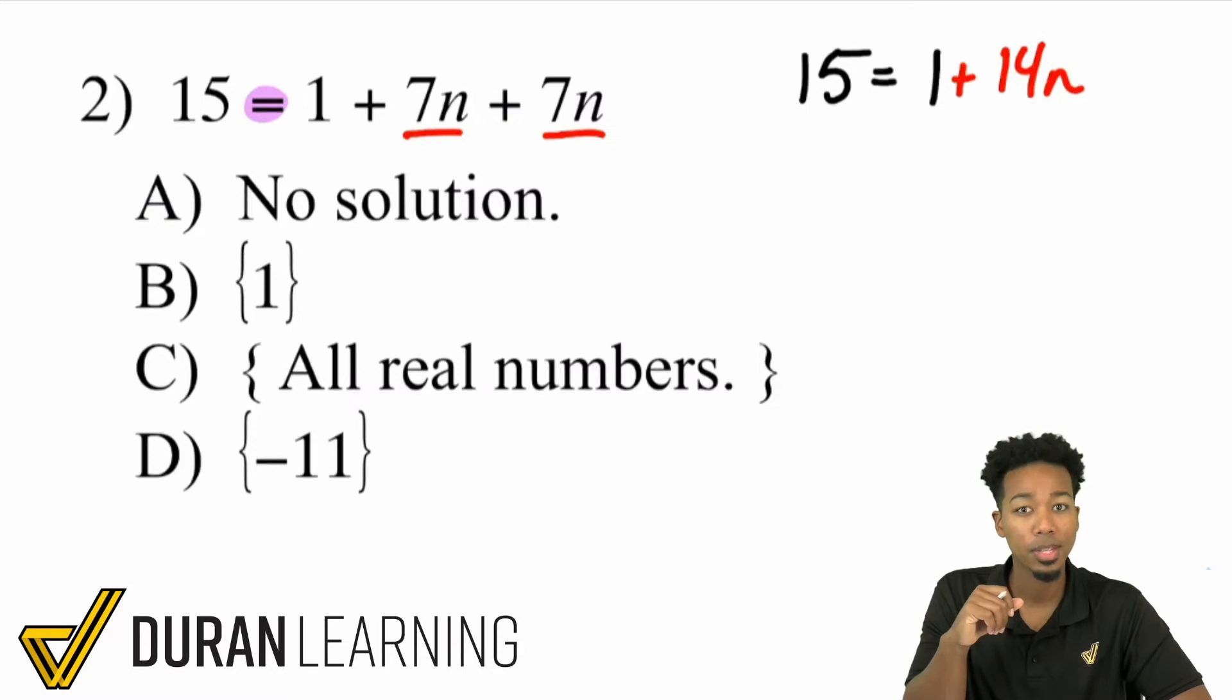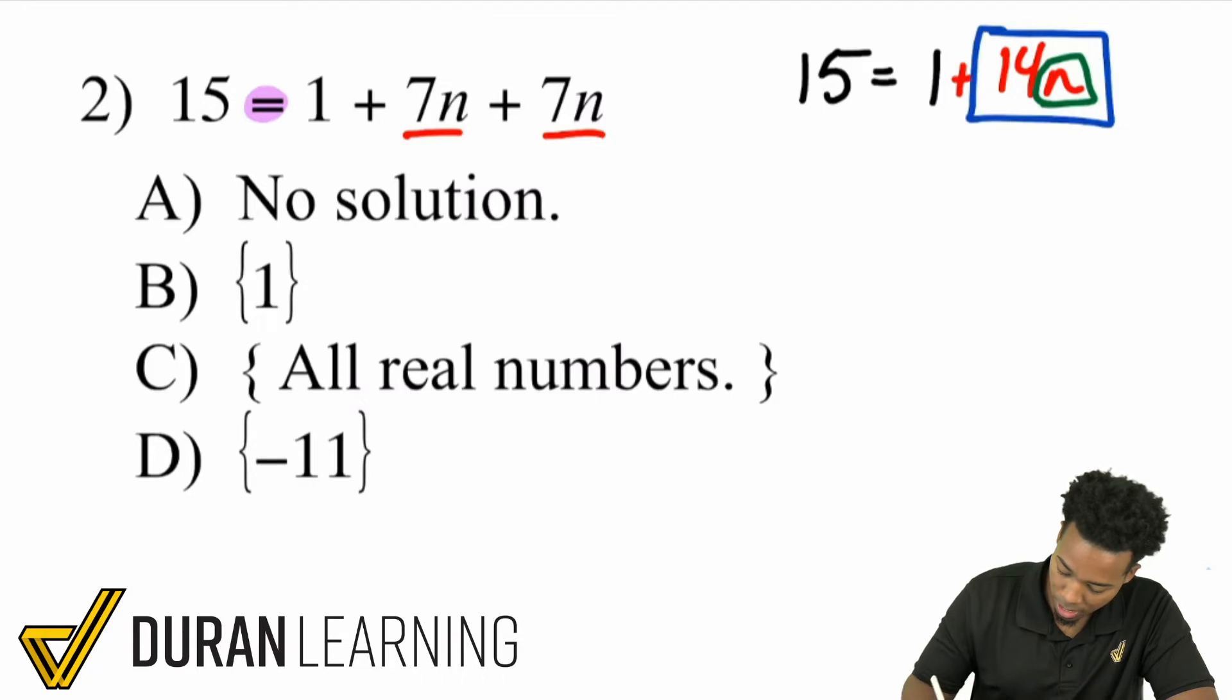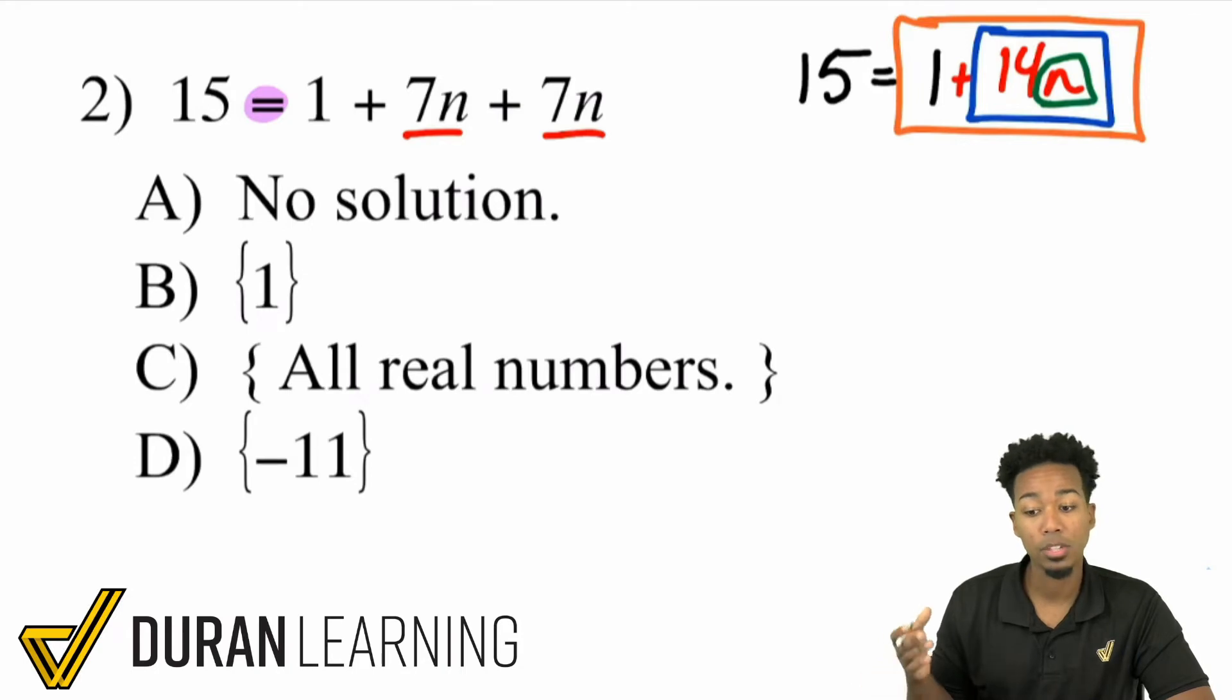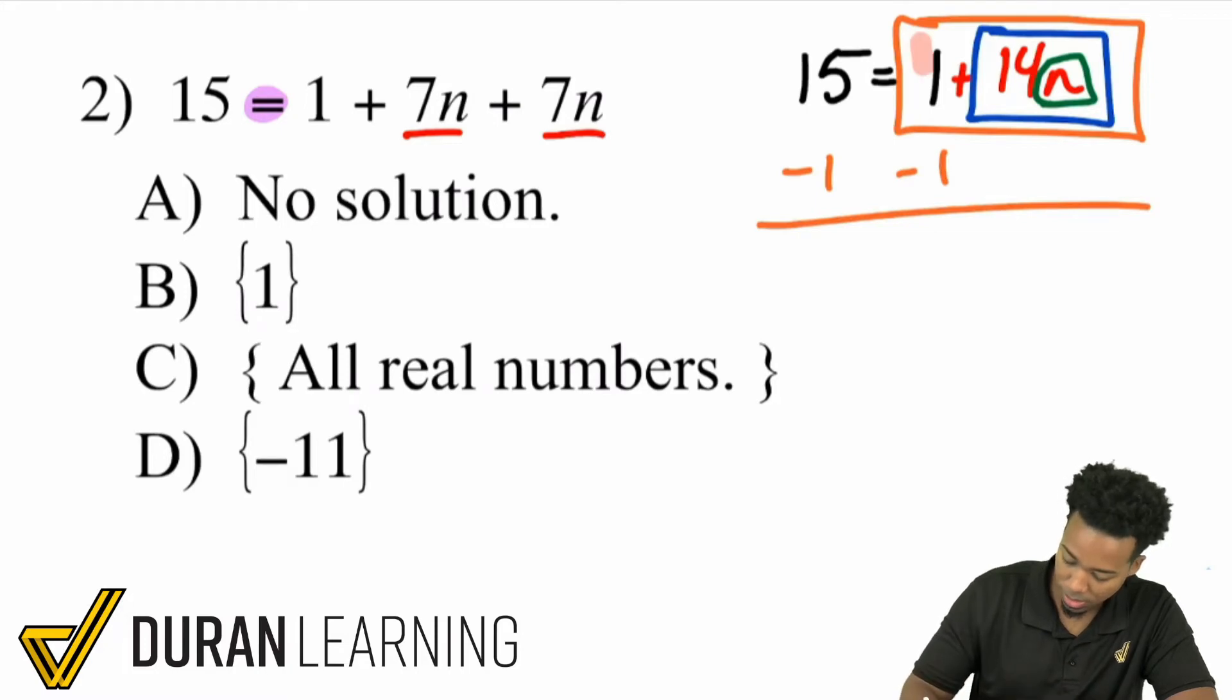Up next, what we're going to do is solve this equation like it's a normal equation now. Because I see here that we have the n is what we're trying to get to. It's being multiplied by 14. And then we have that 1 just sitting there randomly. So that's the last step, adding 1. And so what I'll do is subtract the 1. So let's subtract 1 from both sides. And that's going to give us that cancellation. 15 minus 1 is going to be 14.